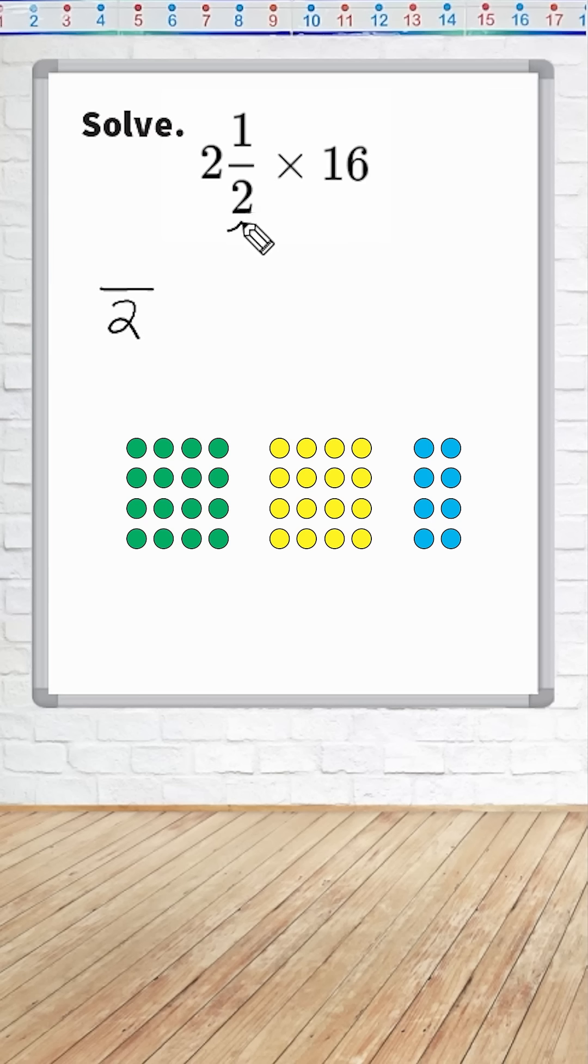Then you multiply the denominator by the whole number, 2 times 2 is 4, plus 1 is 5, so 5 halves is equivalent to 2.5.